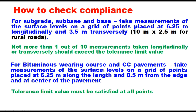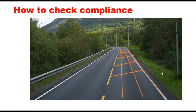For bituminous wearing course and for cement concrete pavements, measurements are taken on a grid of points placed at 6.25 meter along the length and 0.5 meter from the edge and at the center of the pavement. So measurements are taken at 6.25 meter intervals, at 0.5 meter from the edge, and also at the center of the carriageway.